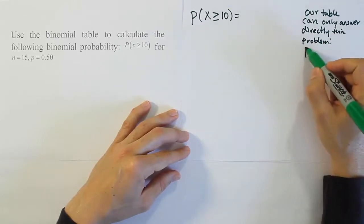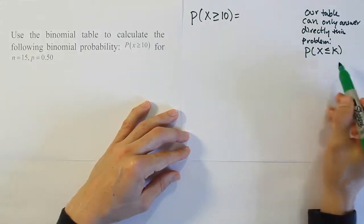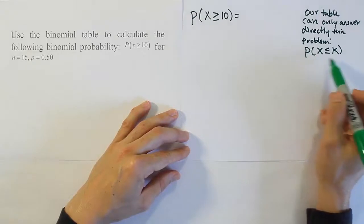We can only answer directly this kind of a problem. The probability that x is less than or equal to some number k. Some integer k. That's the only type of problem it can do.